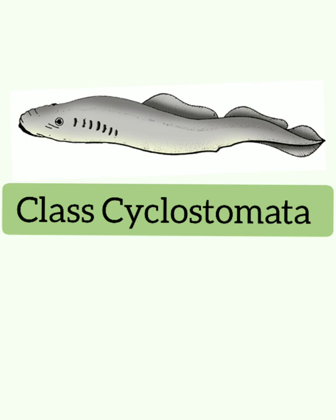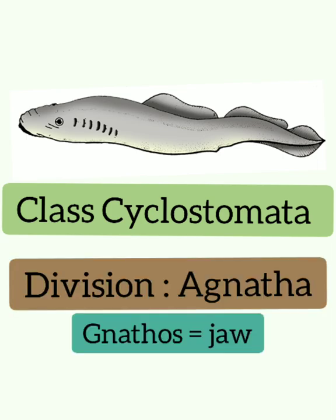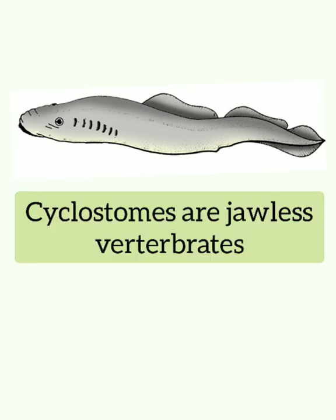Class Cyclostomata lies under division Agnatha. Gnathos means jaw, and Agnatha means those without jaw. So, cyclostomes are jawless vertebrates.